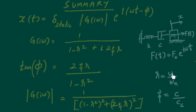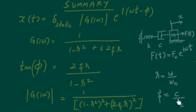We defined a few dimensionless parameters: the frequency ratio, which is given by omega divided by omega-n, where omega is the forcing frequency and omega-n is the natural frequency. We also defined zeta, which is the damping factor — c divided by cc — where cc is the critical viscous damping coefficient and c is the damping coefficient present in the system.